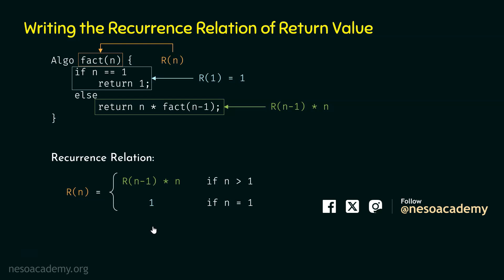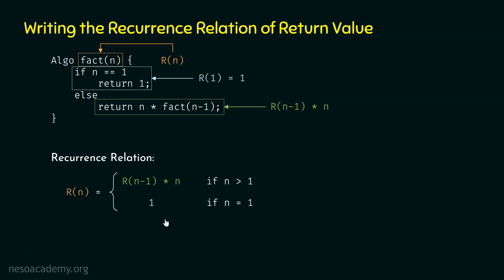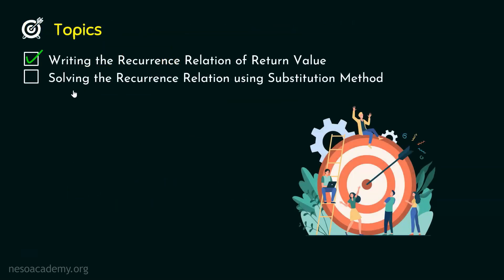I hope this idea is clear. We now have the recurrence relation of return value of this big problem. We have represented the return value of fact of n in terms of the return value of the smaller sub-problems. We have written our recurrence relation. Now, as we have written the recurrence relation of return value, let's move to the next topic where we will discuss how to solve it using substitution method.